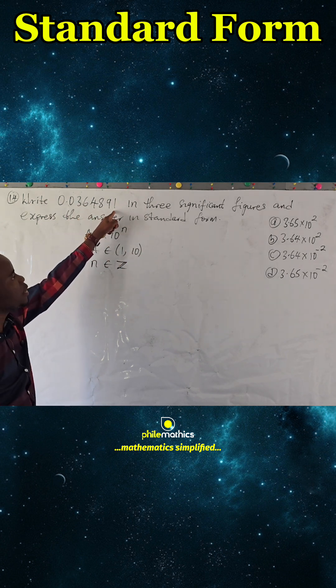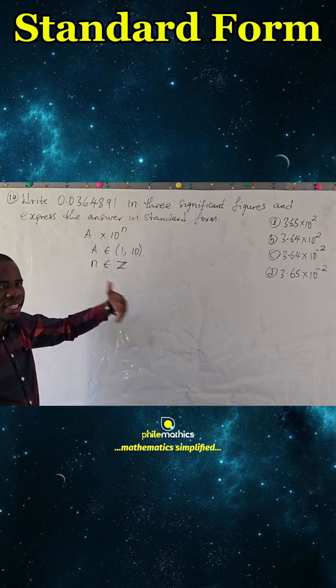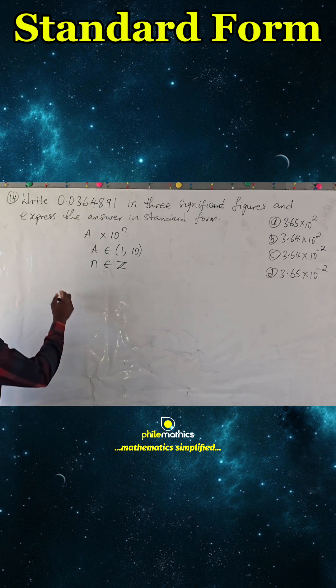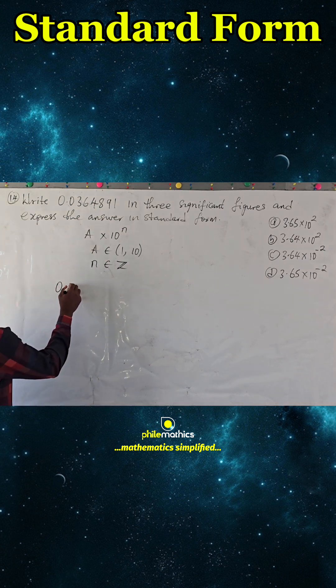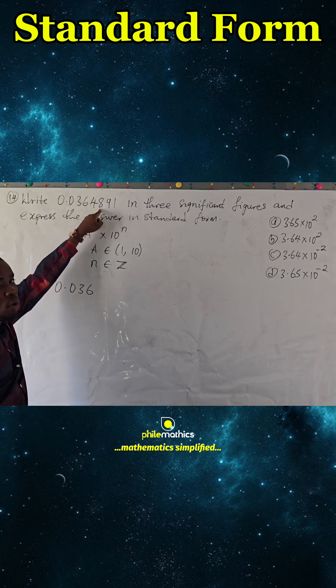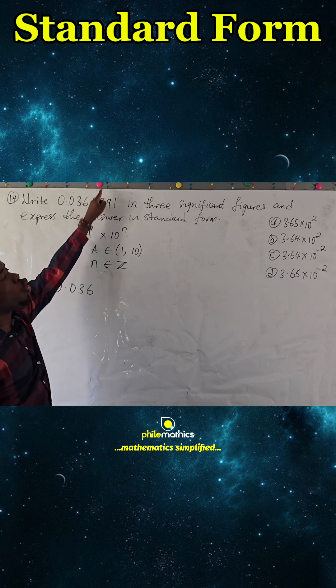We are interested in three significant figures, which means one, two, three. So we have 0.036. For this third digit, you have to check if the subsequent figure is five and above. If it is, we round up and add it to here, so this will become...